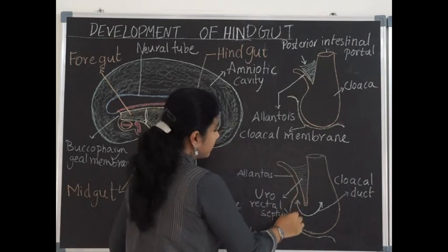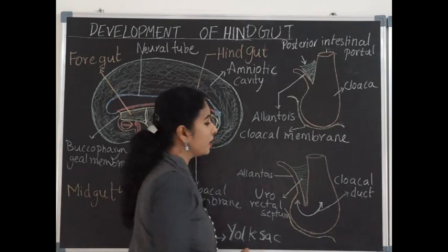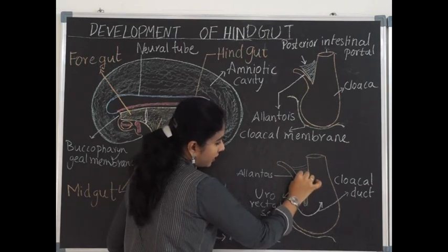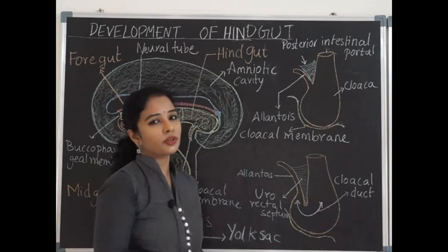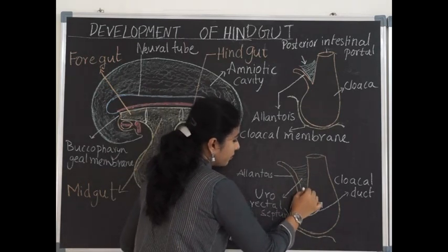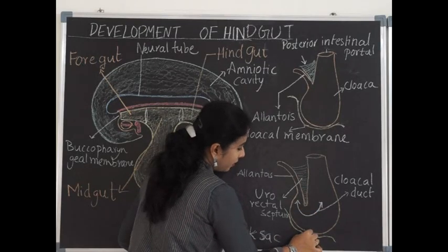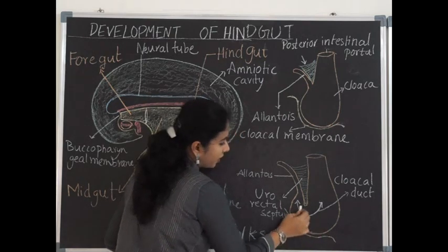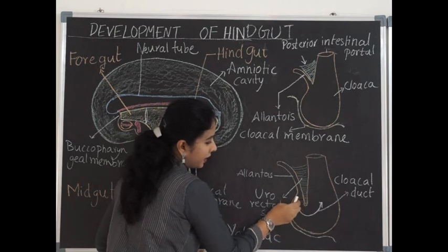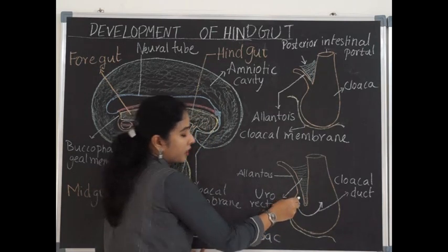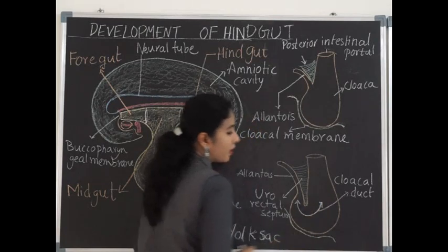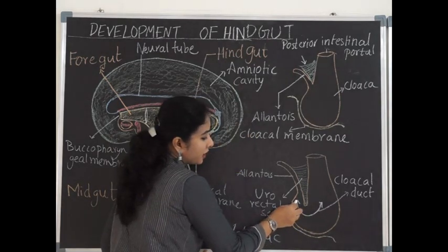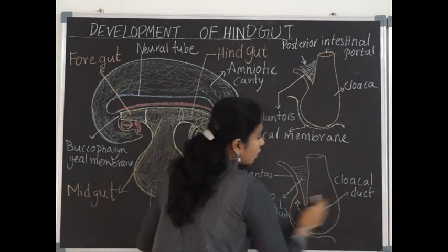The cloaca has the allantois, and a groove grows down from it called the urorectal septum. This urorectal septum grows downward and comes in contact with the lower part up to the cloacal membrane. Because of this septum, it divides the anterior part as the primitive urogenital sinus and the posterior part is called the primitive rectum. The communication between the urogenital sinus and the primitive rectum is called the cloacal duct.